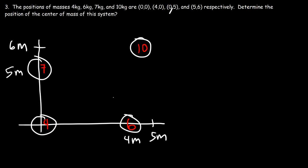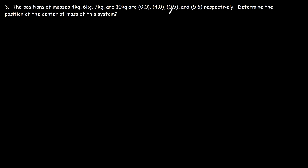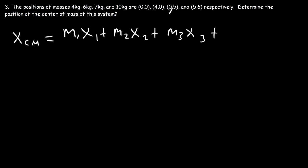If we had to estimate, the center of mass should be somewhere in the middle of these four masses, since the majority of the mass is close to the 10 kilogram mass. To calculate it, we take it one step at a time. Let's calculate the x-coordinate of the center of mass: it's m1·x1 plus m2·x2 plus m3·x3 plus m4·x4, divided by the total mass.